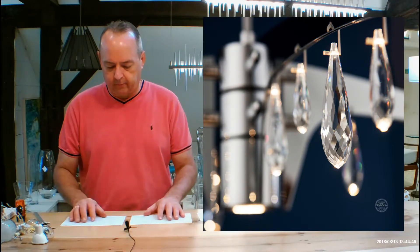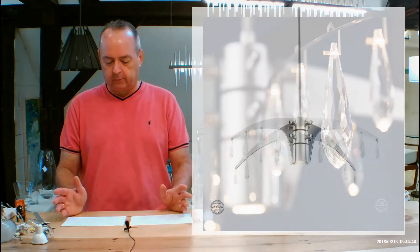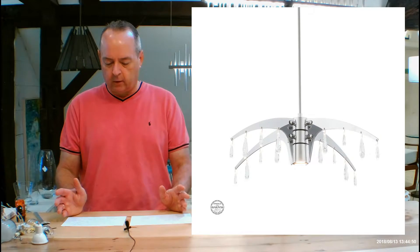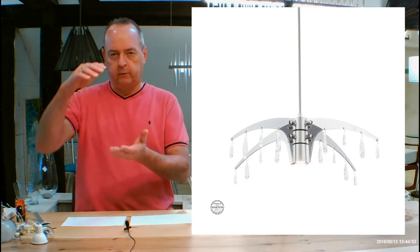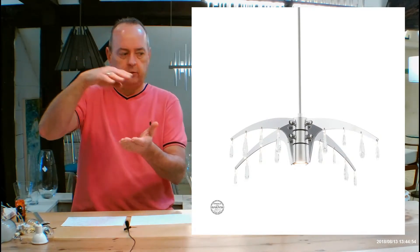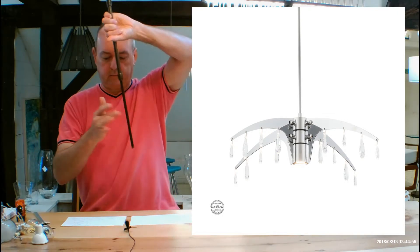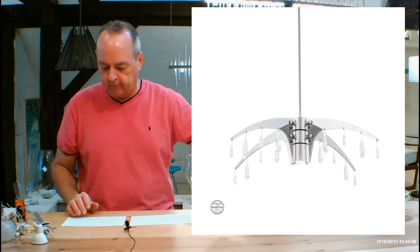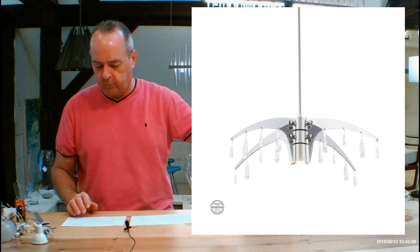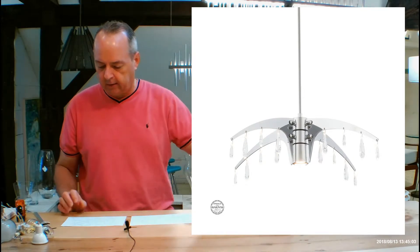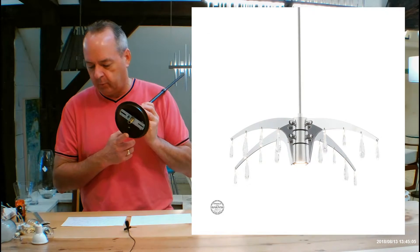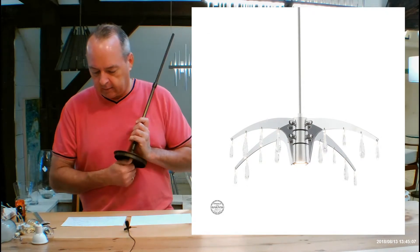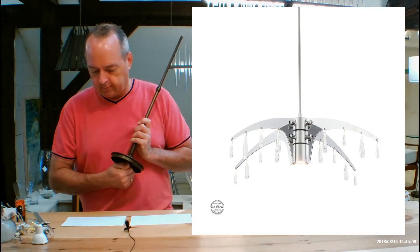Let's talk about the size of these two pieces to begin with. The smaller one, the 139001, the body of the fixture from the very bottom to where the telescoping rods start is 7.6 inches high, and the diameter is 27.9 inches. The canopy that goes on the ceiling is 5.5 inches.